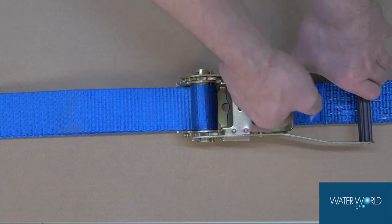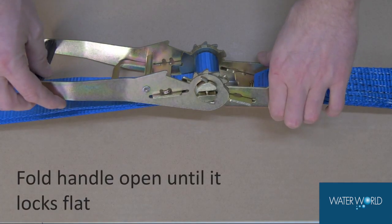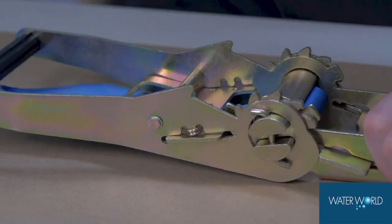To release, simply pull and hold the release tab, then fully open the ratchet until it is completely flat. Grab the webbing from the non-fixed side and pull to release.